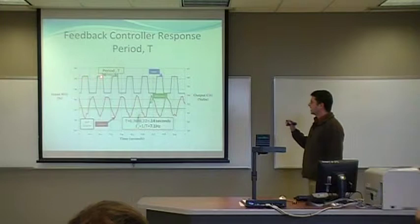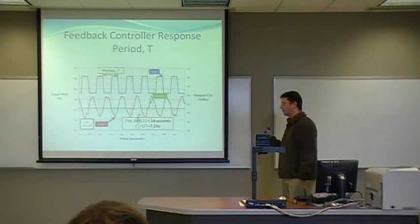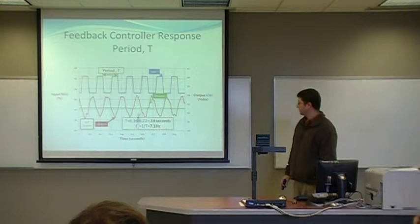Now what I mentioned, I kind of alluded to before, is the period. Taking one point on the input curve corresponding to the adjacent cycle, the same point, the distance there for this particular one came out to be 0.14 seconds. The inverse of that would give us the frequency of the input. However, for this particular feedback relay system, that also corresponds to the ultimate frequency of the system. In this case, it was 7.1 hertz for the input range that we chose here.